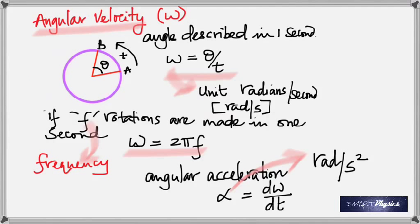Here's the comparison between translatory (linear) motion and rotational motion. Displacement Δx becomes theta or Δθ. Time stays the same. Velocity becomes angular velocity omega. Linear acceleration becomes angular acceleration alpha. The units all agree perfectly — that's why rotational motion is supposed to be easy, because you've already seen it in linear motion.